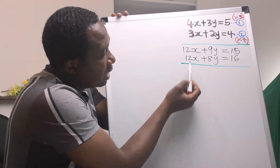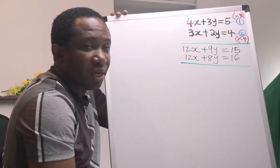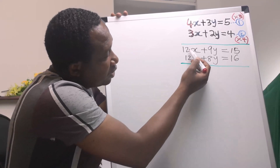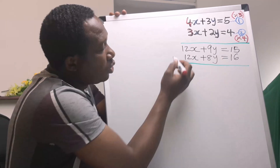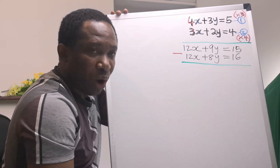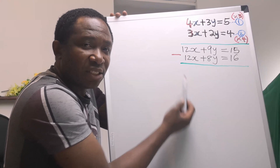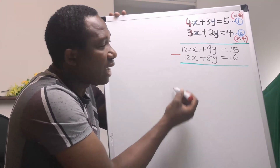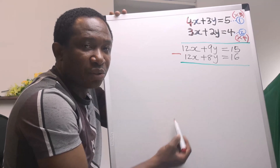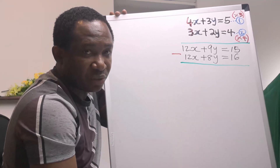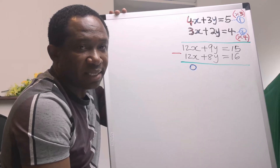Now you can see that the coefficient of x in equation 1 and 2 are the same. Whenever the coefficient of x are the same, or the coefficient of y are the same, you eliminate one of them. However, when the coefficients are the same but one is negative, then you add. But here, both are plus, so we subtract. 12 minus 12 is 0 — x is now eliminated.